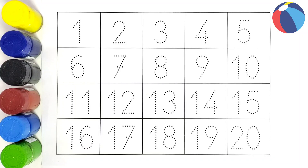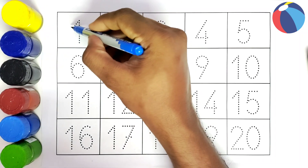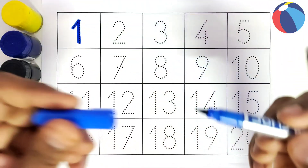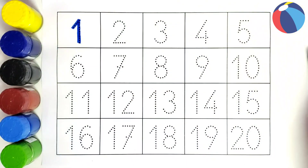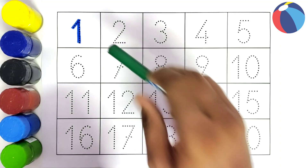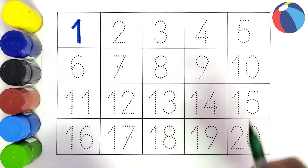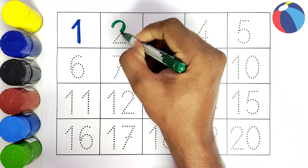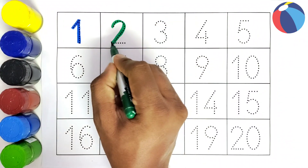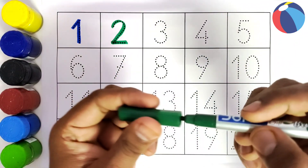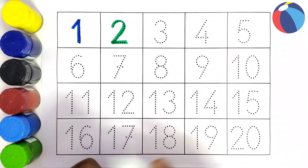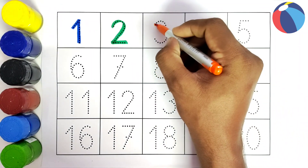So we will start coloring all these numbers. This is 1, number 1. This is 2, number 2. This is 3, number 3.